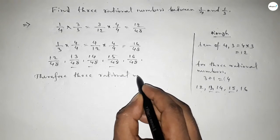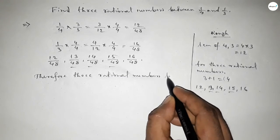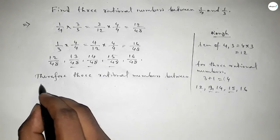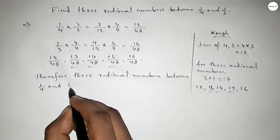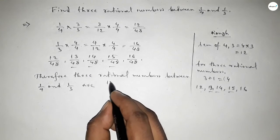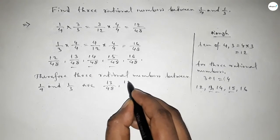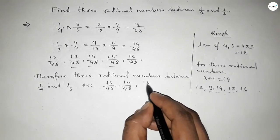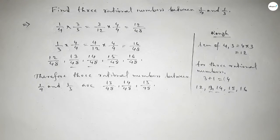Therefore, three rational numbers between 1 over 4 and 1 over 3 are 13 over 48, 14 over 48, and 15 over 48. This is the process to find three rational numbers between 1 over 4 and 1 over 3. Thanks for watching.